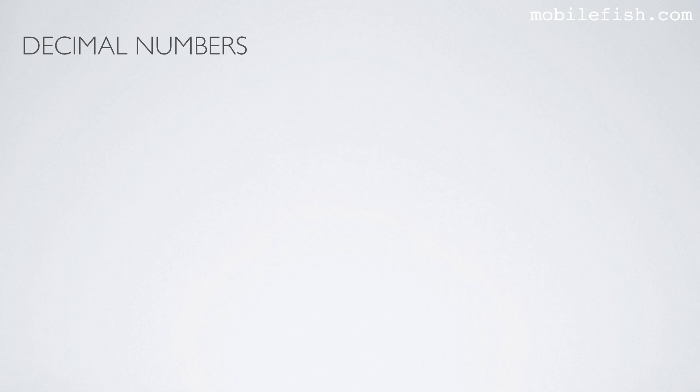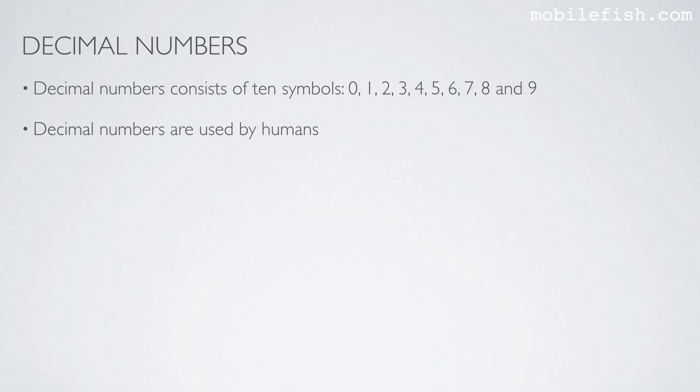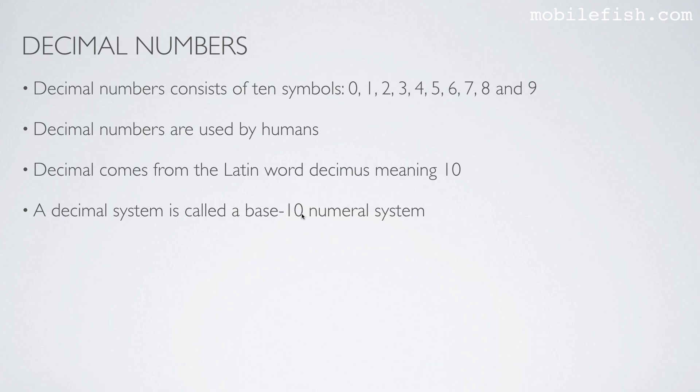So what are decimal numbers? Decimal numbers consist of 10 symbols: 0, 1, 2, 3, 4, 5, 6, 7, 8, and 9. Decimal numbers are used by humans. And decimal comes from the Latin word decimus, meaning 10, because we have 10 symbols. A decimal system is called a base 10 numeral system.